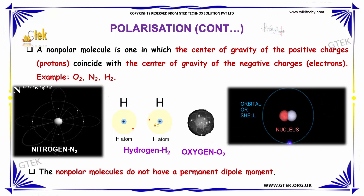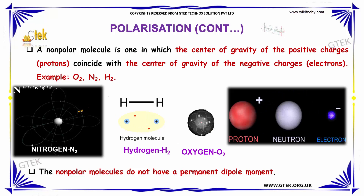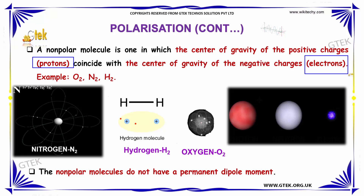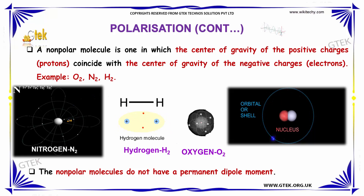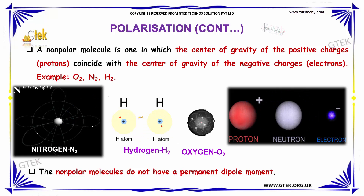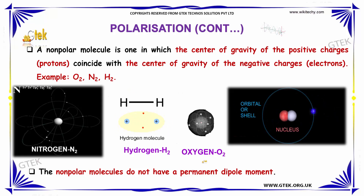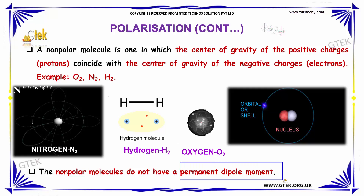A nonpolar molecule is one in which the center of gravity of the positive charges coincides with the center of gravity of the negative charges, that is electrons. Examples include the oxygen molecule, nitrogen molecule, and hydrogen molecule. Nonpolar molecules do not have a permanent dipole moment — this is an important point to keep in mind when discussing polarization.